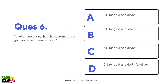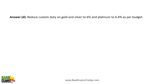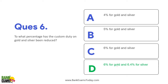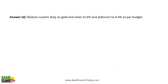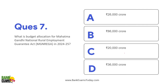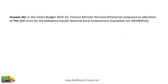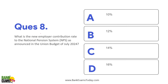To what percentage has custom duty on gold and silver been reduced? Custom duty on gold is now 6%, and for platinum it is 6.4%. What is the budget allocation for MGNREGA? The budget allocation for MGNREGA is ₹86,000 crore under the new system.